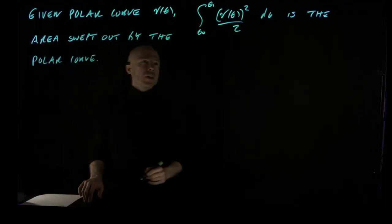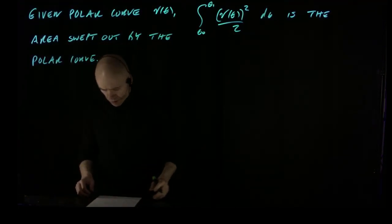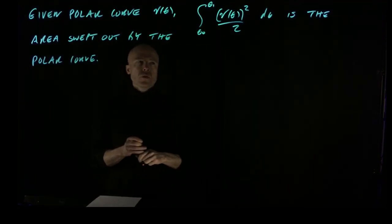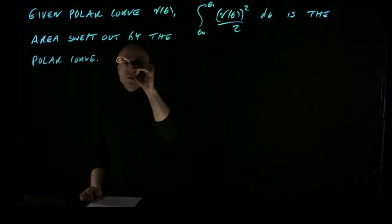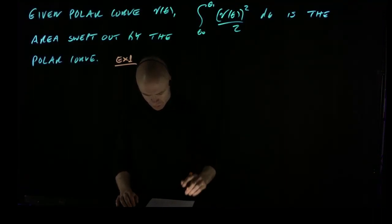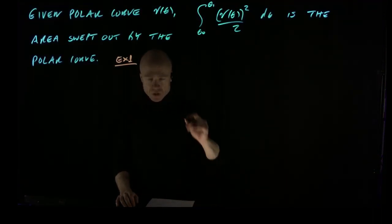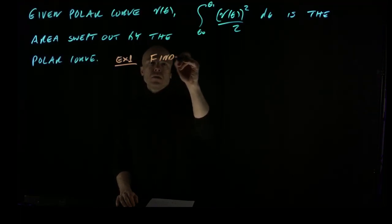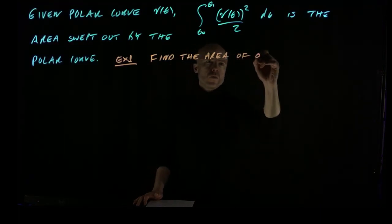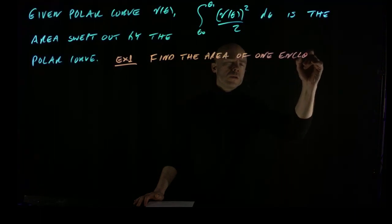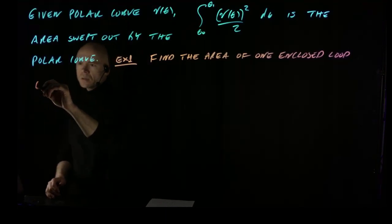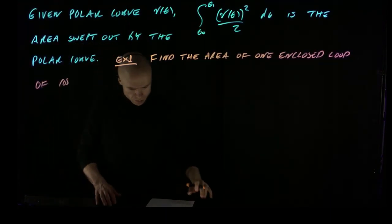We're going to do an example where we calculate with this formula. Example one: find the area of one enclosed loop of r = cos(2θ).